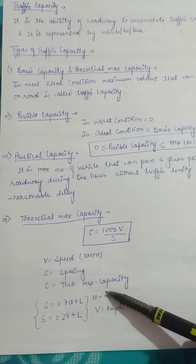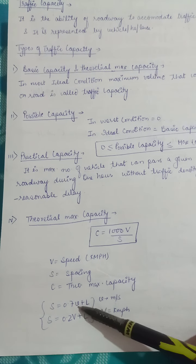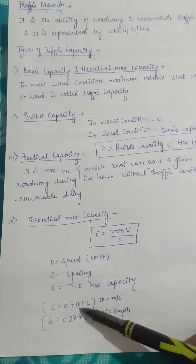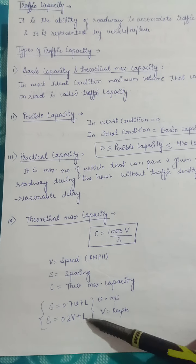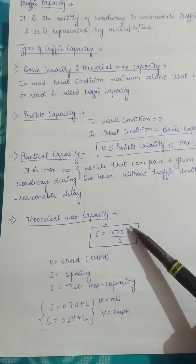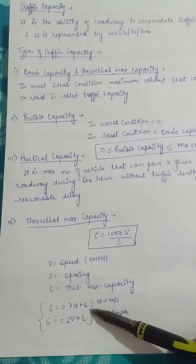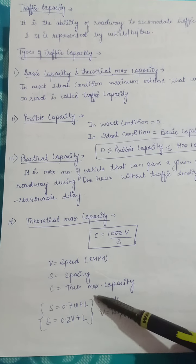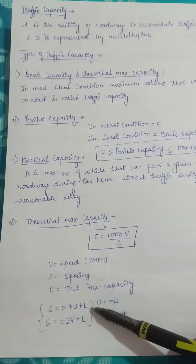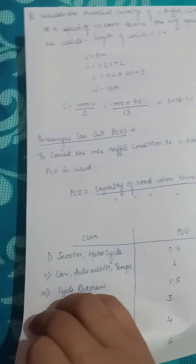We have two formulas for space headway (S): one where V is in metres per second — S = 0.7V + L — and one where V is in km per hour — S = 0.2V + L. In the formula C = 1000V/S, if V is in kmph, we use the second formula. Here L is the length of the vehicle, which is given in the question; if not given, we assume 6 metres.